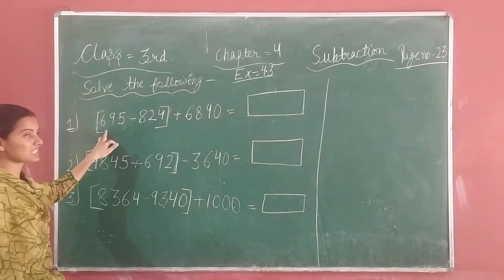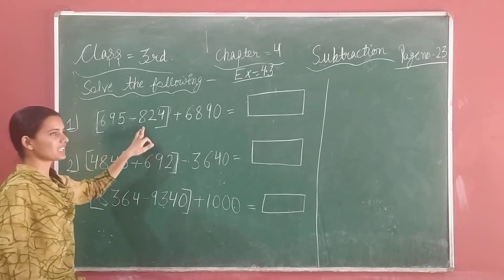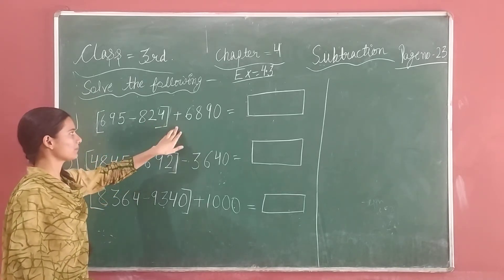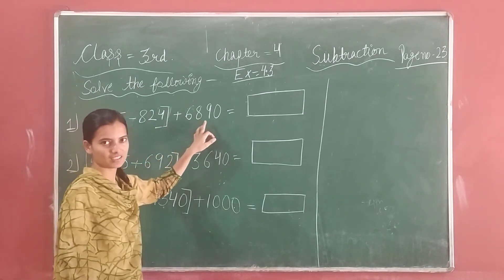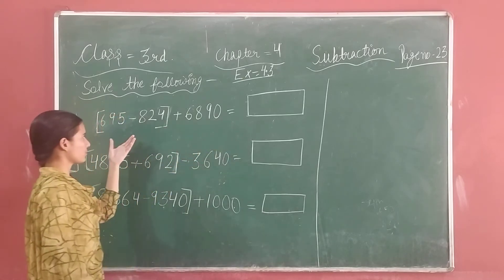The first question is 8,695 minus 824 and then plus 6,890. So let us start now.